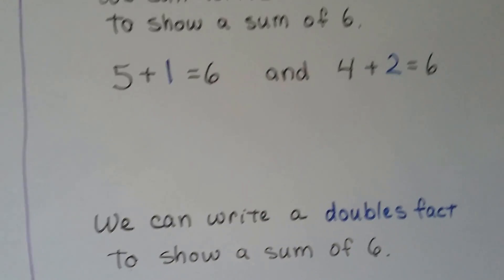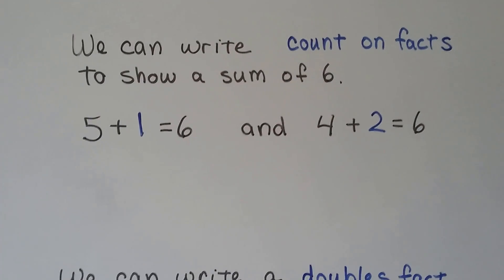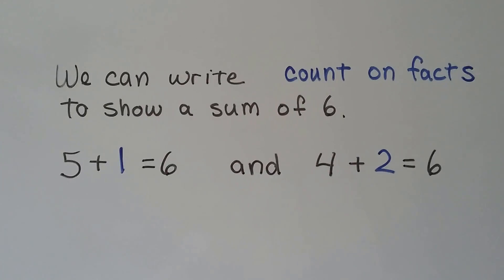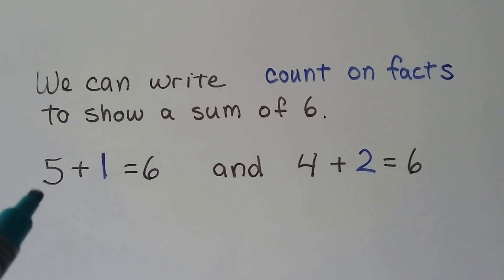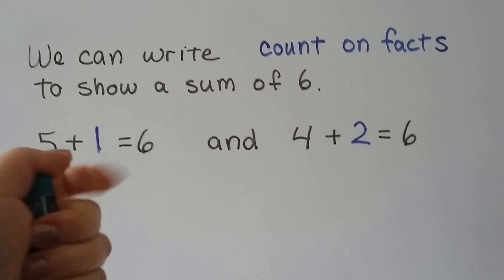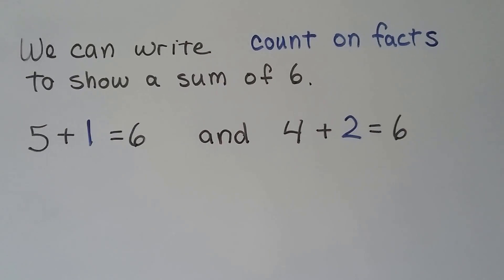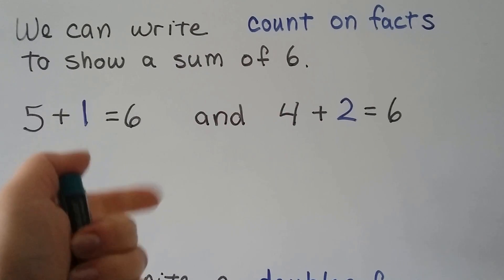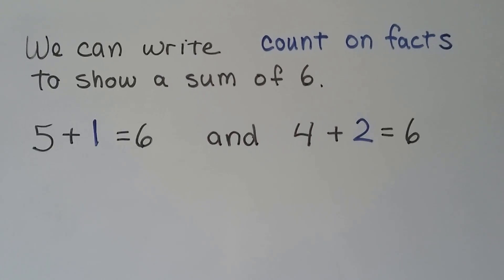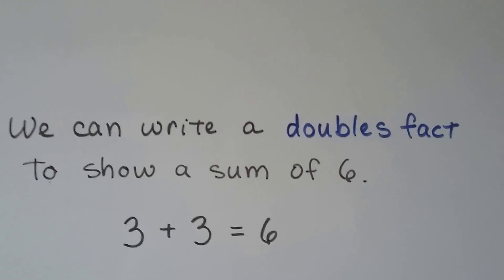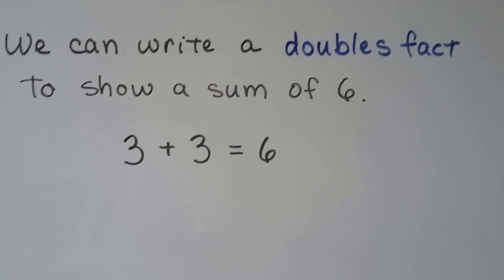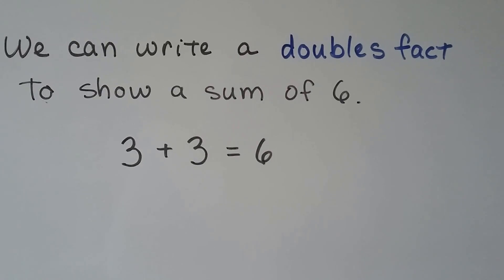We can write count on facts to show a sum of six. Count on facts — we count on one, two, three. So we can write five plus one equals six, and four plus two equals six. Those would be count on facts. We can write a doubles fact to show a sum of six — the addends have to be the same. We can write three plus three, that equals six.